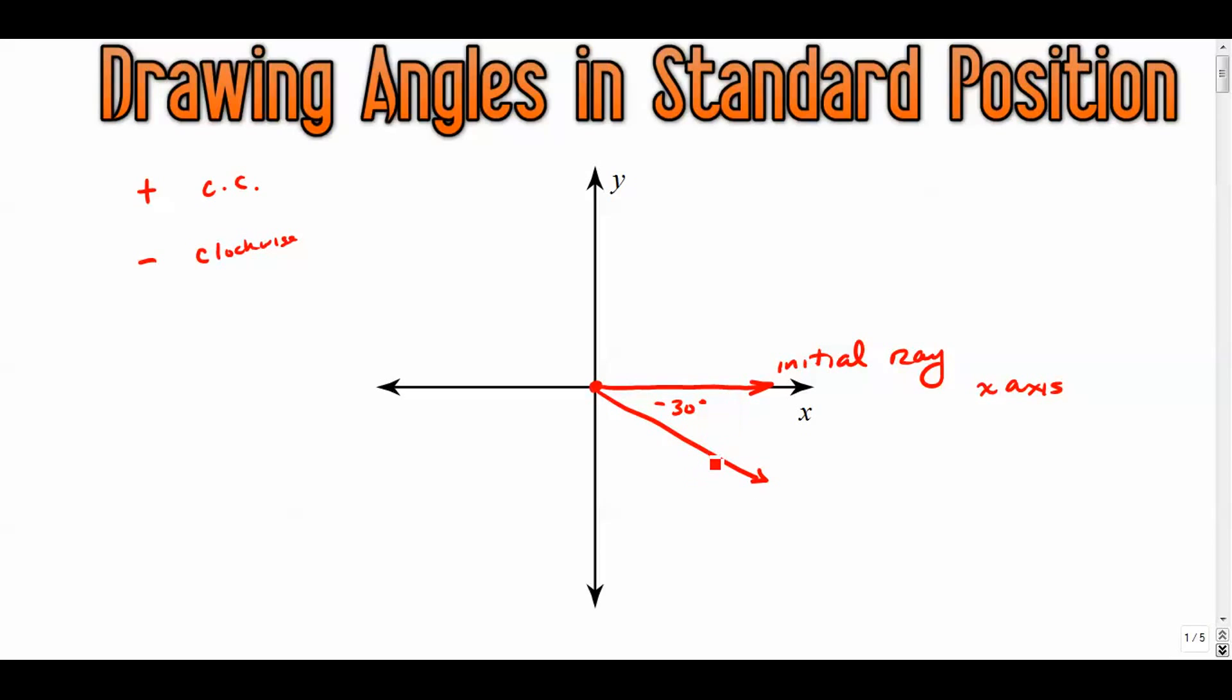Same thing goes for radians too. This is of course pi over 6 radians. And if I wanted to open up down this way, this would be negative pi over 4 radians.